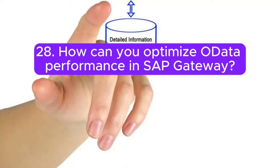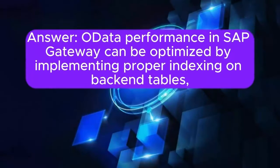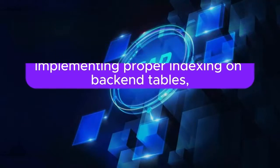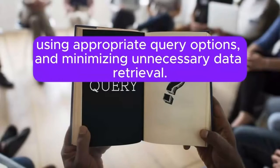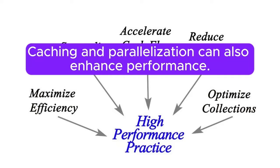Question 28: How can you optimize OData performance in SAP Gateway? OData performance in SAP Gateway can be optimized by implementing proper indexing on back-end tables, using appropriate query options, and minimizing unnecessary data retrieval. Caching and parallelization can also enhance performance.